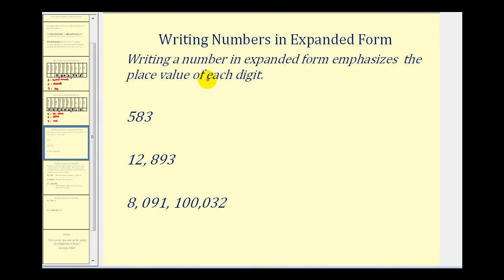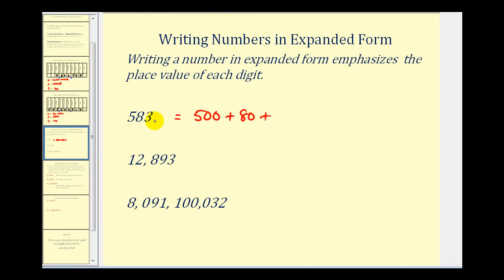Now, sometimes you'll be asked to write numbers in expanded form. Writing a number in expanded form is a way to emphasize the place value of each digit. This five represents five hundred, this eight represents eight tens or eighty, and this three represents three ones or three. This is called expanded form of five hundred eighty-three.